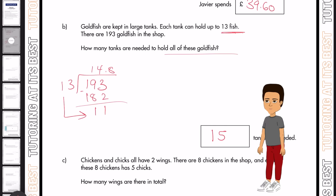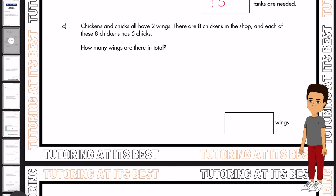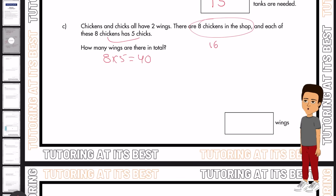Part C. Chickens and chicks all have two wings. There are eight chickens in the shop. So instantly, that's 16 wings. And each of these eight chickens have five chicks. So in total, eight times five is 40. So that's 40 in total.